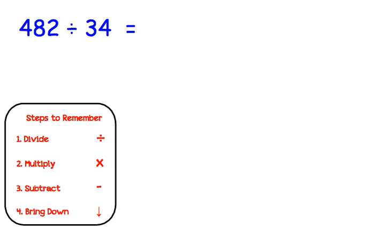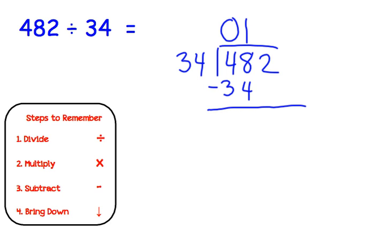This will be our final problem. Again, this one's trickier. It's going to have a remainder, so make sure you're following along with us. We're going to do 482 divided by 34. And again, 34 does not go into 4, so we have to put a 0 above the 4. 34 does go into 48, though, and it only goes in one time. So we did our division. Now we're going to do our multiplication. 34 times 1 is just 34. Next step, we need to subtract. So 8 minus 4 is 4. 4 minus 3 is 1. And our final step is to bring down. So we need to bring down that 2.